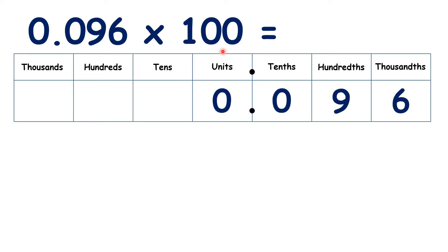Now, what is 0.096 times 100? Remember, we're moving the digits two places, so we have 9.6.